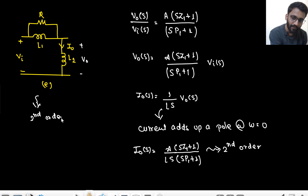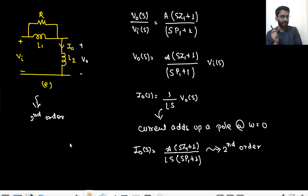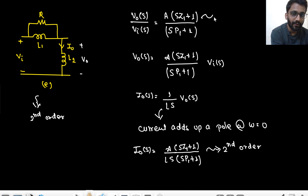So every time they ask the order of a circuit: first calculate for voltage output, then for current. In the case of a capacitor, the current adds a zero at ω = 0. In the case of an inductor, the current adds a pole at ω = 0. If there are now two poles, this is a second-order circuit. You also need to make sure there is no zero at ω = 0 in the voltage transfer function that could cancel the new pole.